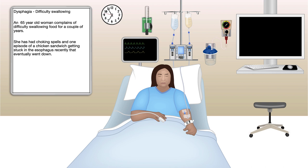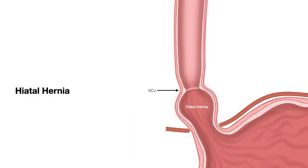This story is typical for Schatzki Ring type of history. You know that this is hiatal hernia, and you notice the squamous-columnar junction pointed by an arrow.